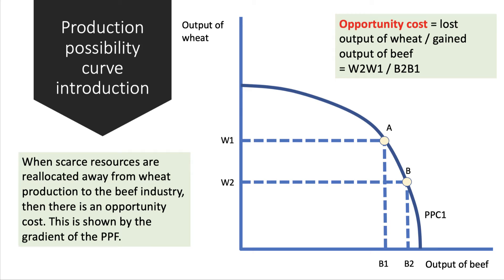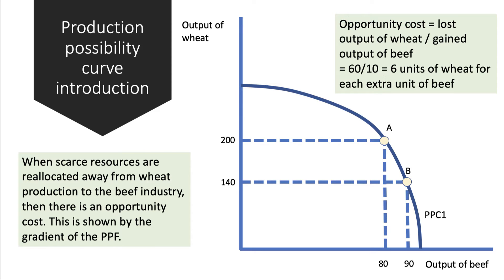So let's put some numbers on this just to make this a little clearer. Let's say that we increase our output of beef from 80 to 90. That involves giving up 60 units of wheat. So we're having to give up six units of wheat for each extra three units of beef.